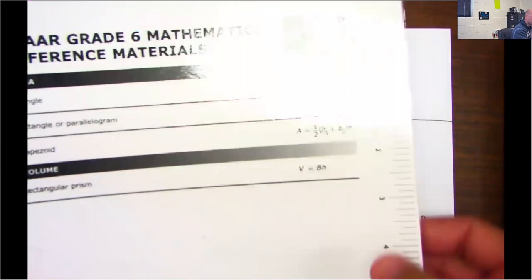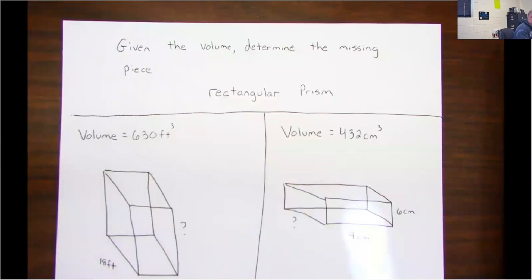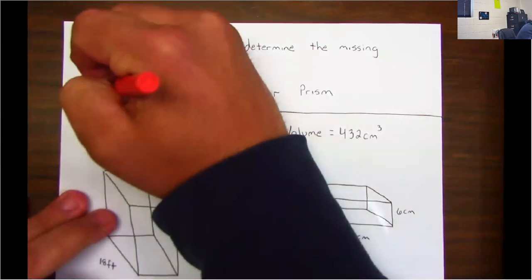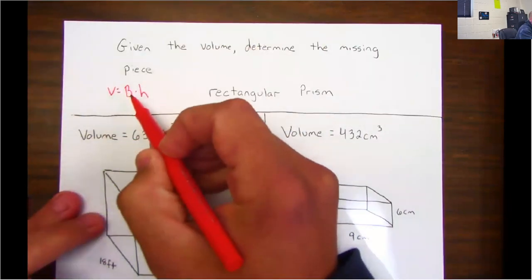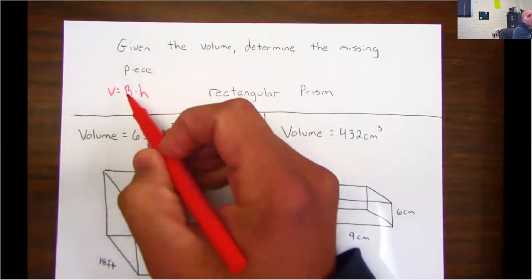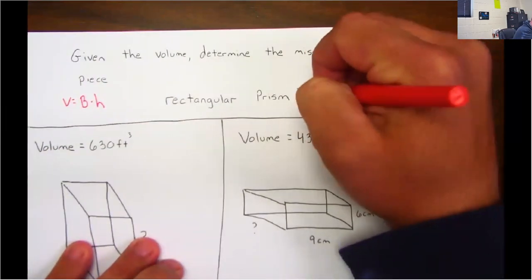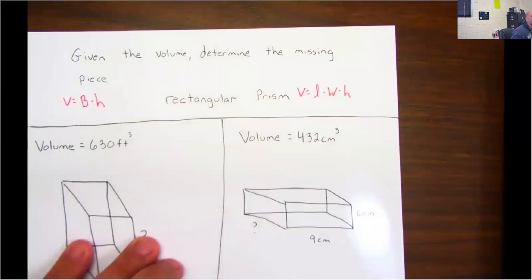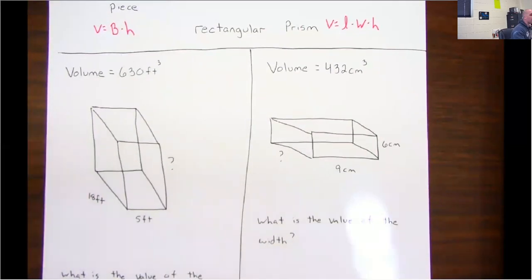So guys, remember from our formula chart, the formula for a rectangular prism is V equals big B times h. The big B stands for the area of the base. Well, I'm going to rewrite it because in reality all you're doing is length times width times height, and this is the formula I'm going to use.